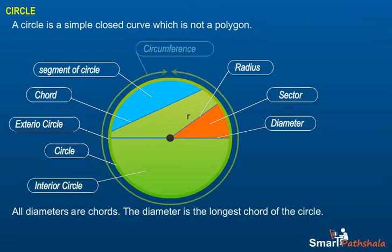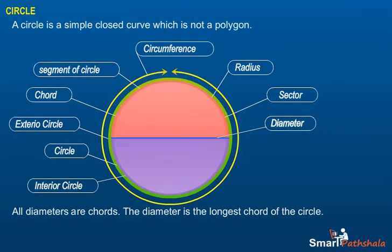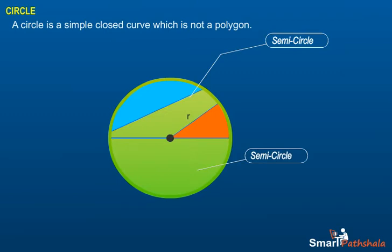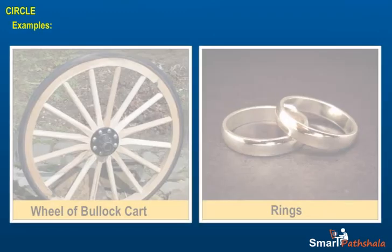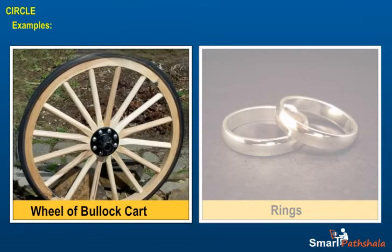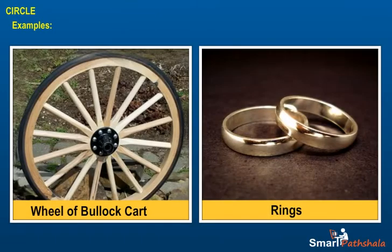The distance around a circle is its circumference. A diameter of a circle divides it into two equal parts called semicircle. A semicircle is half of a circle with the end points of diameter as parts of the boundary. Examples of circle from real world are wheel of bullock cart, rings used in the circus, etc.